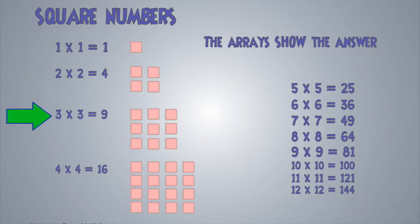3 times 3 equals 9. In the array next to it, we have 3 by 3 by 3 equaling 9. And last one on the left hand side, 4 times 4 equals 16. In the array, 4 by 4 by 4 by 4, making the same number, 16 square number.